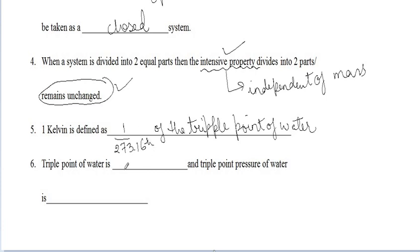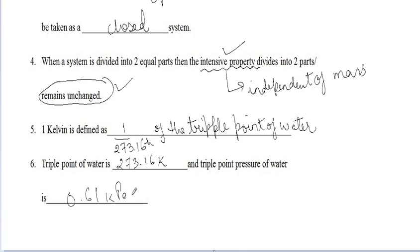The next question asks for the triple point of water — both temperature and pressure. The triple point temperature of water is 273.16 Kelvin, and the triple point pressure of water is 0.61 kilopascal. We need to remember all these values.